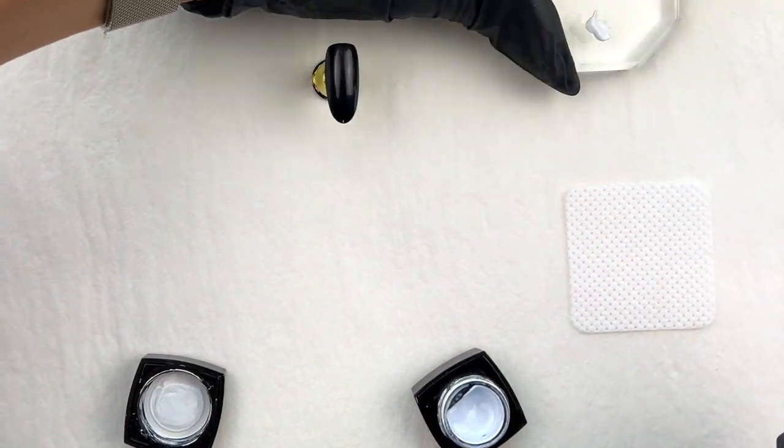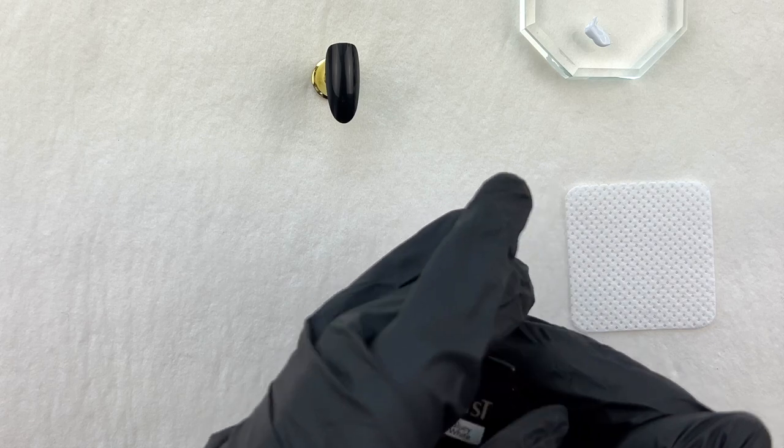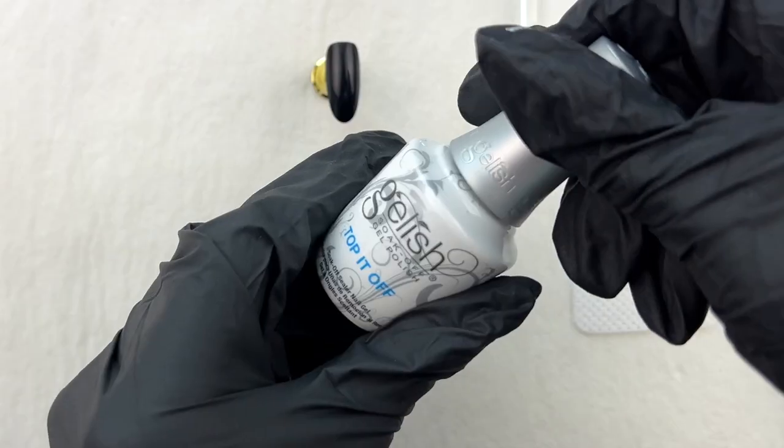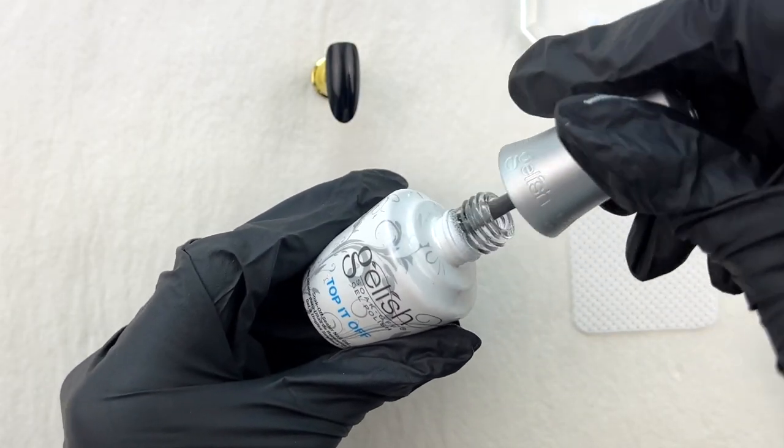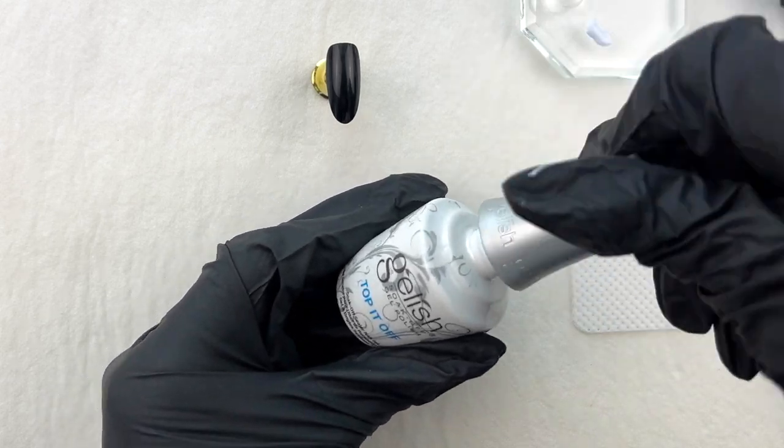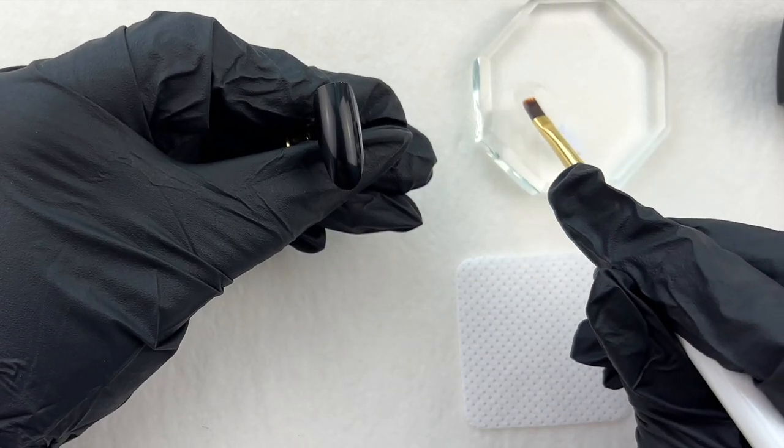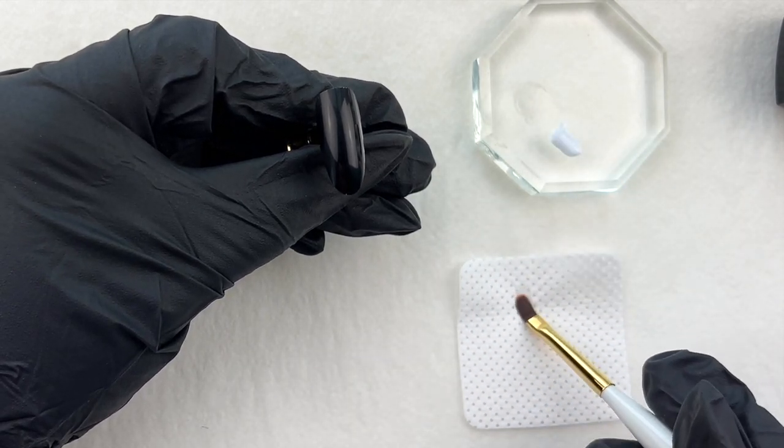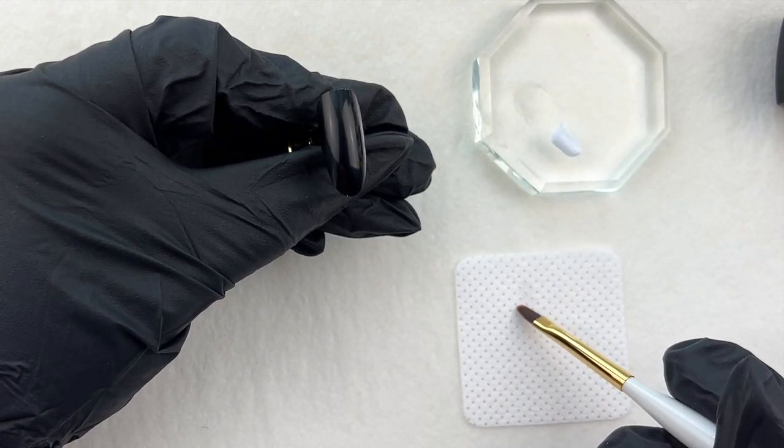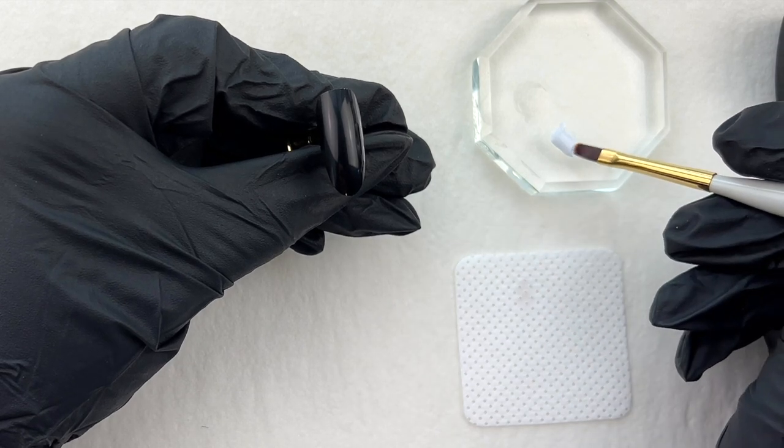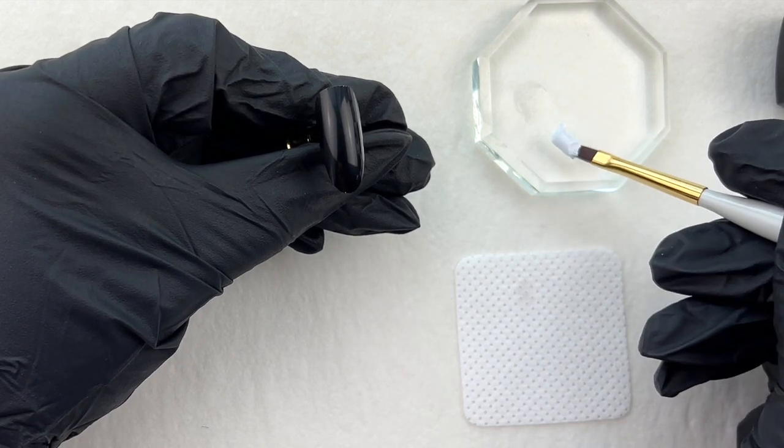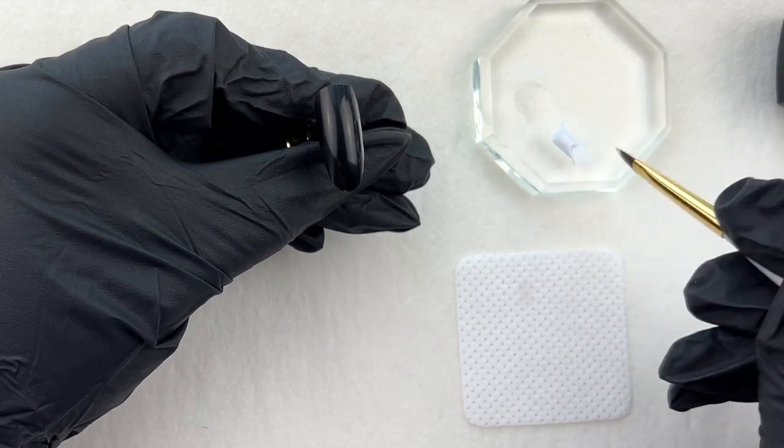Take the white gel using a stir stick and put it on a palette. Take a clear gel as well. I always condition my brush by using a clear gel. First, remove the excess gel on the lint-free wipe, grab the gel on the brush, and blend it into the brush.